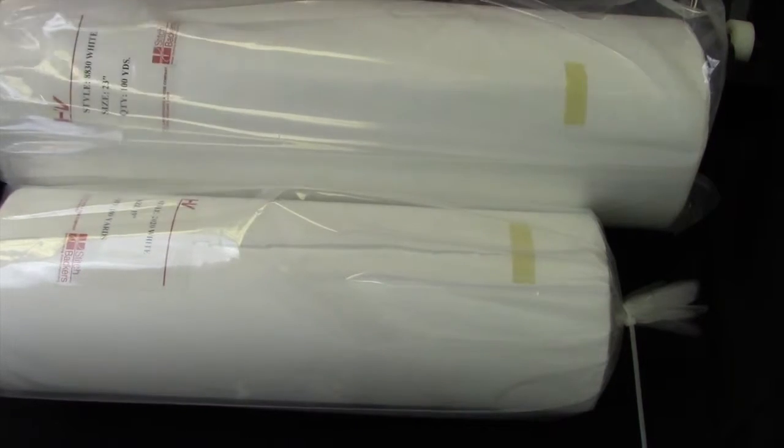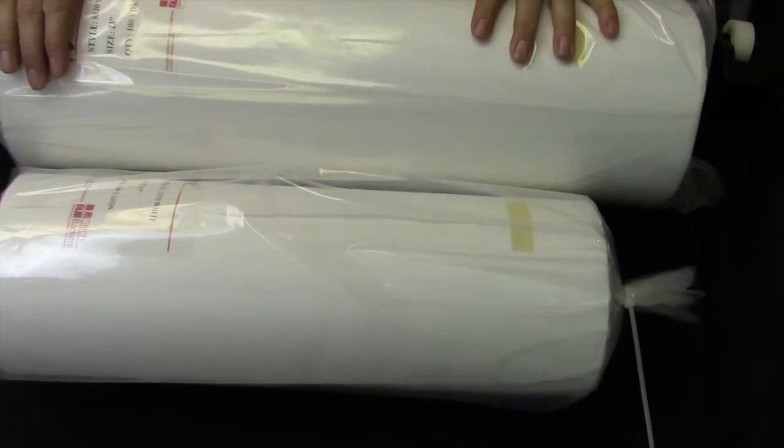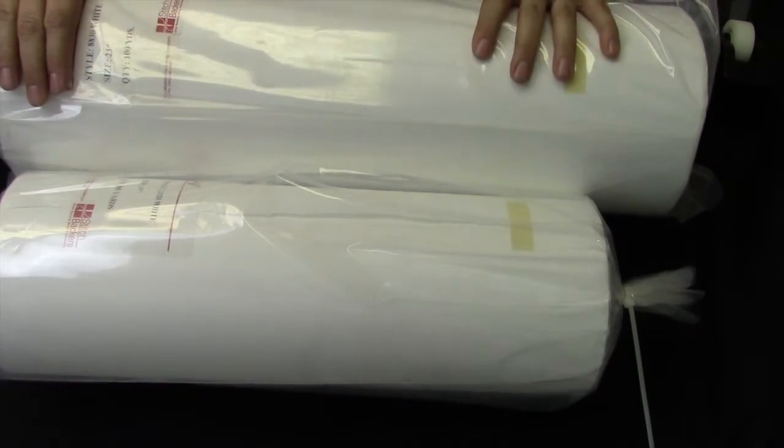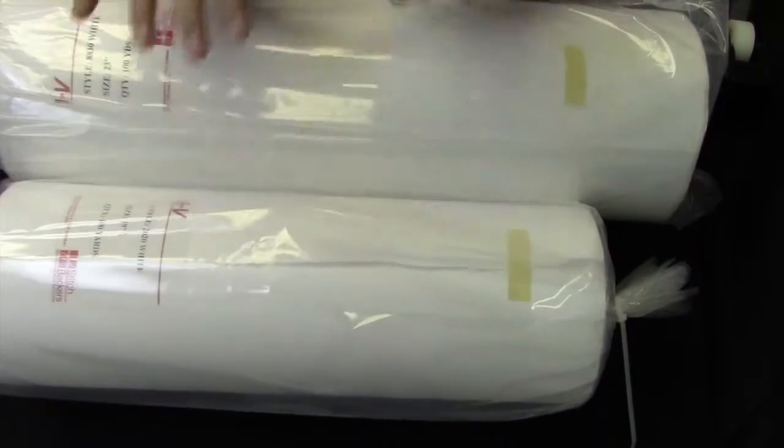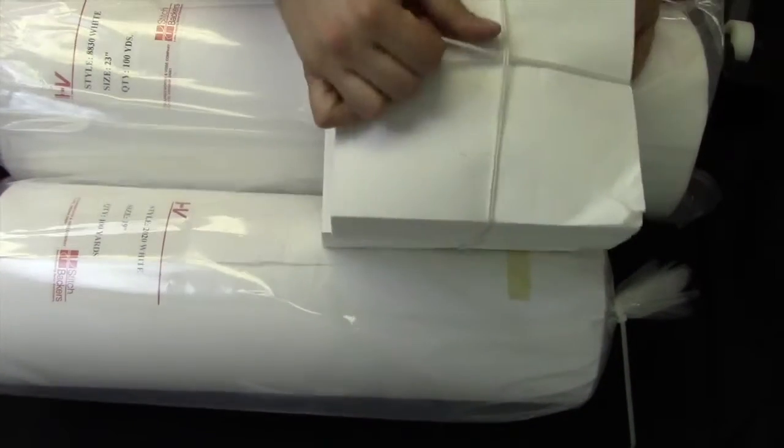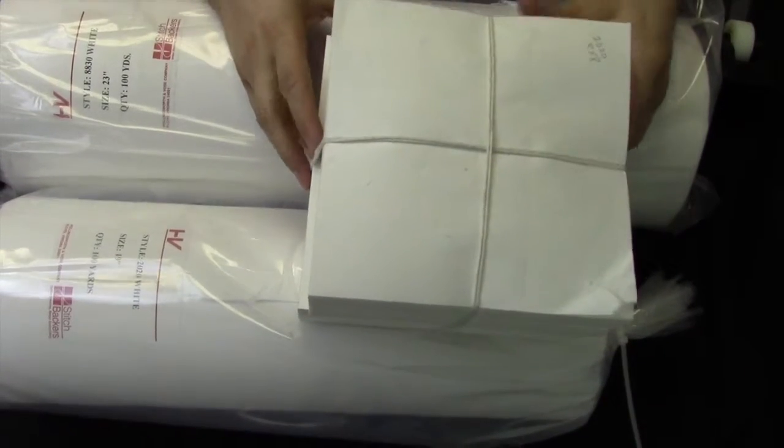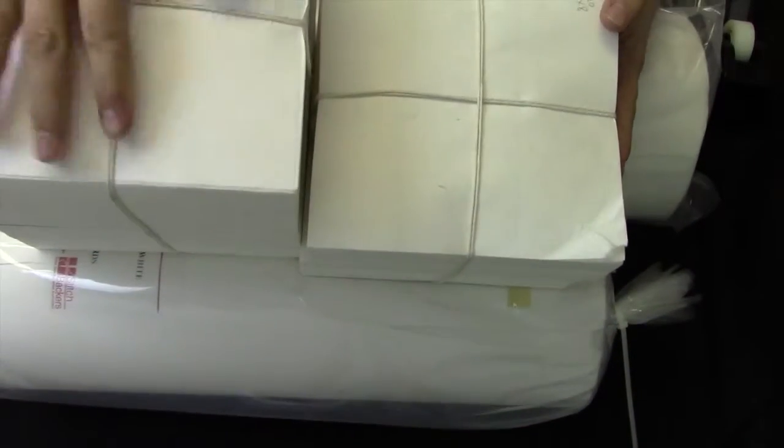First we'll start off with the big stuff. We've got a hundred yards of cutaway and a hundred yards of tearaway backing, so that's going to cover all your big stuff going forward. We've also got 500 sheets pre-cut, we've got tearaway and cutaway on those sheets too.